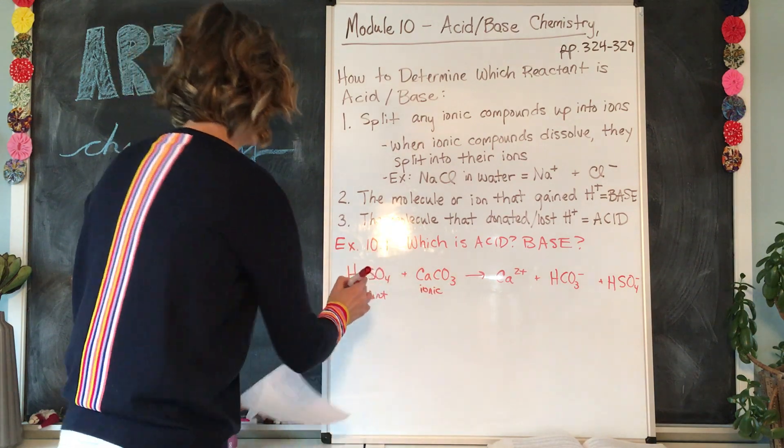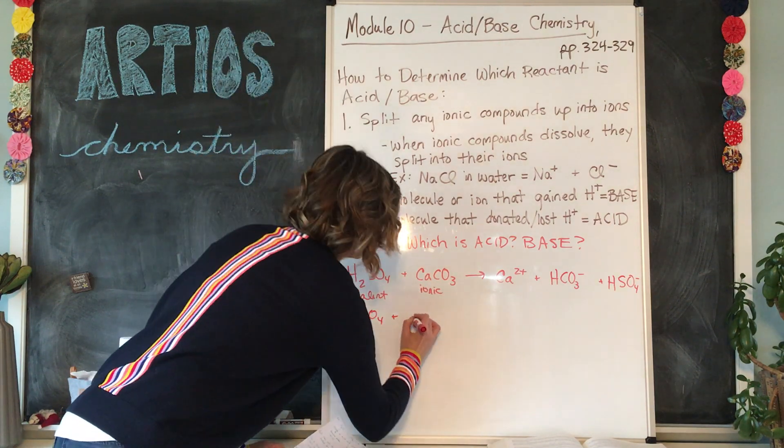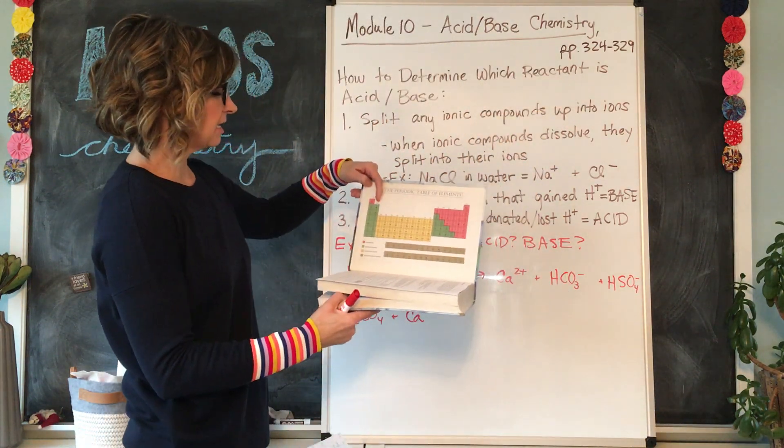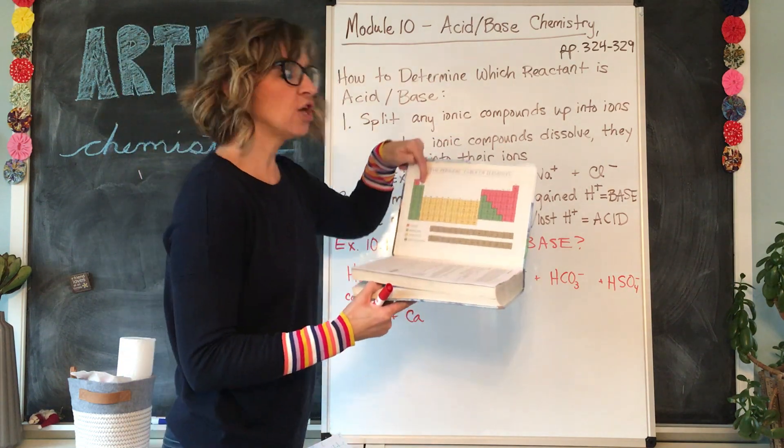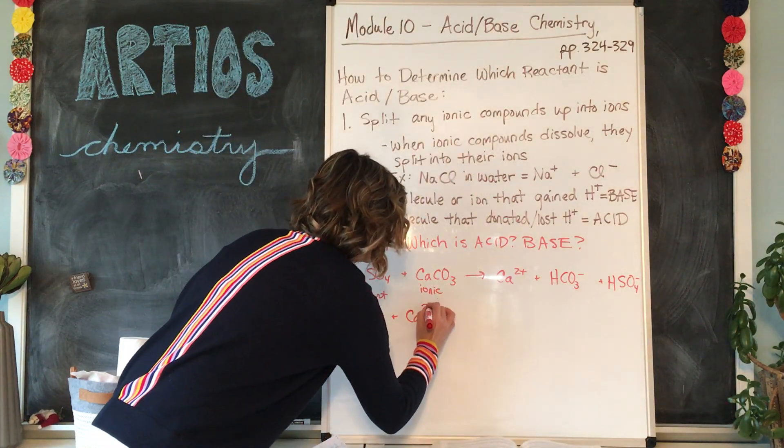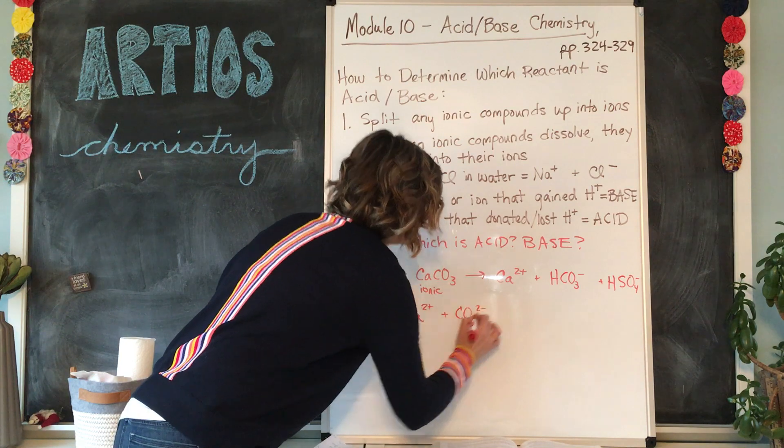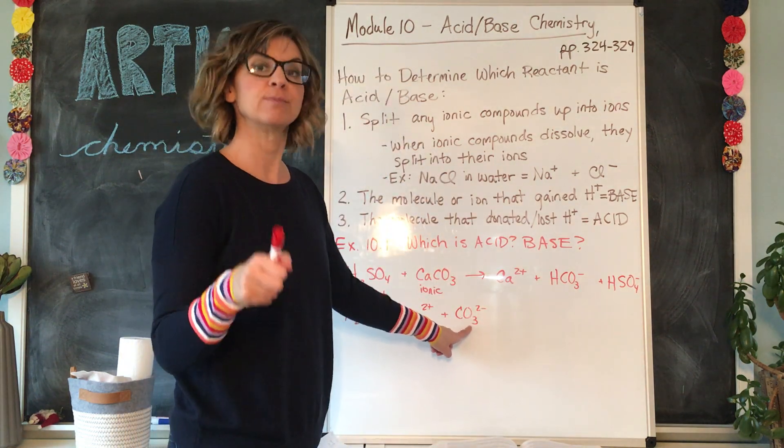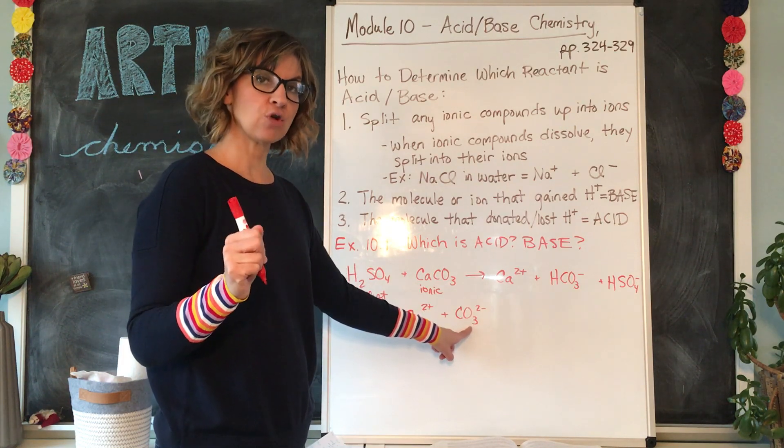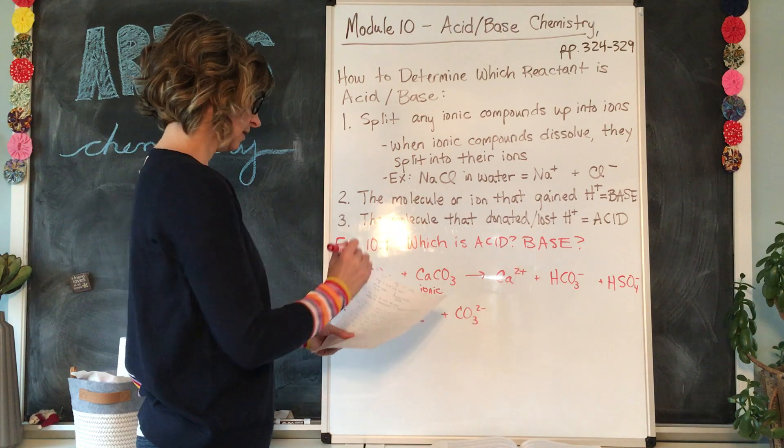So our first step tells us to split any ionic compounds up into ions. So we're going to write it right below like this. H2SO4 plus, if we split this up into ions, calcium has a, what kind of charge does it have? It is in the second column, column number two. So it has a 2+ charge. Ca2+ plus CO3 2-, which you should have memorized or become familiar with in the last module. This is known as the carbonate ion, CO3 2-. So we've split those up into their different ions.